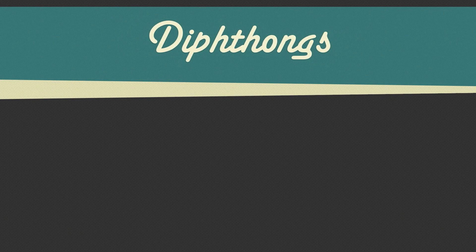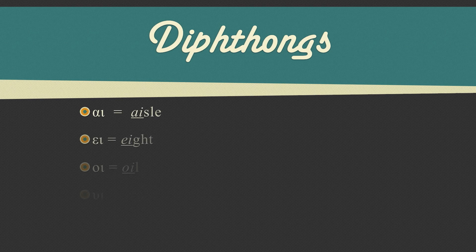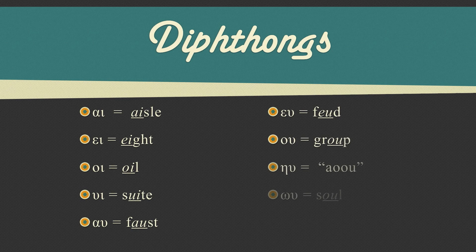Additionally, Greek, like English, has things called diphthongs. Diphthongs, when together, make their own unique sound. So alpha and iota together form a diphthong that says 'i', like in our word 'isle'. Epsilon and iota make a diphthong that says 'a', like in our word 'eight'.